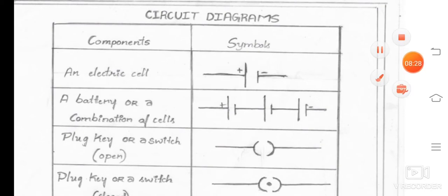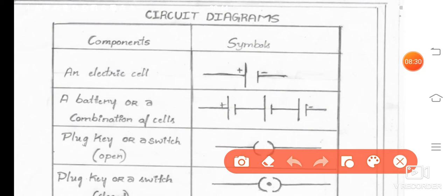Circuit diagrams. An electrical cell is going to represent like this. Here the bigger one is plus. Then the smaller one is minus. Next, a battery or a combination of cells. See, this is a cell. So the combination of cell is called as battery.